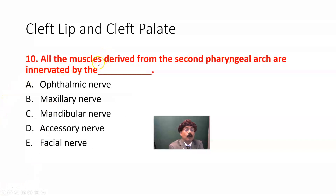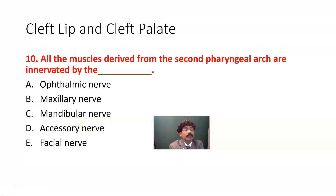Question ten: All the muscles derived from the second pharyngeal arch are innervated by what nerve? Ophthalmic nerve, maxillary nerve, mandibular nerve, accessory nerve, or facial nerve. The answer is E, facial nerve. All the muscles of facial expression are derived from the second pharyngeal arch, and the second pharyngeal arch has nerve supply from the facial nerve.